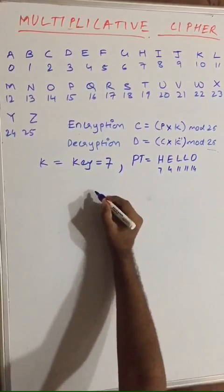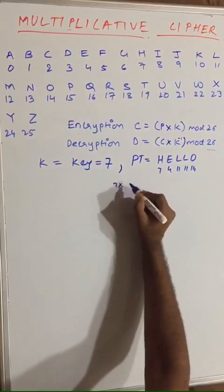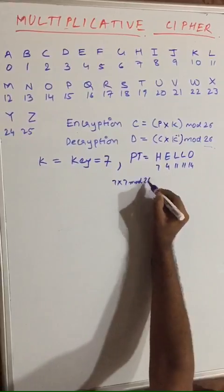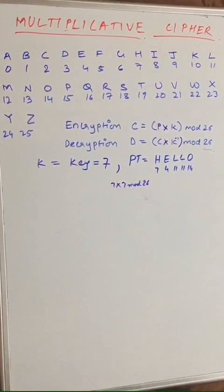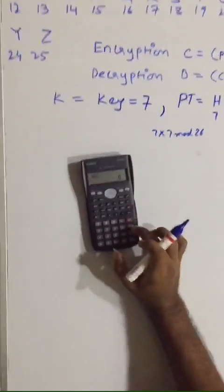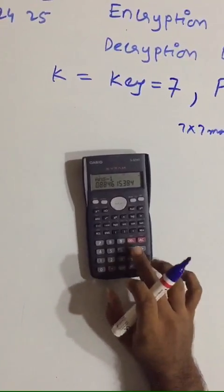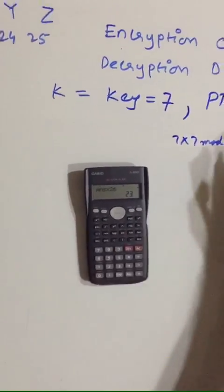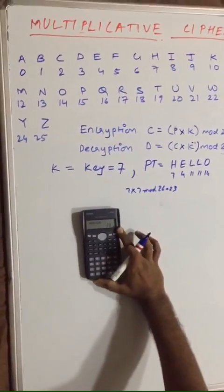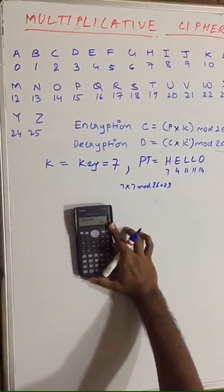For H=7, it will be equal to 7 × 7 mod 26, so 49 mod 26 = 49 − 1×26 = 23. This calculation method was already taught in our previous lectures — if you have forgotten, please refer to the Fermat's theorem lecture.